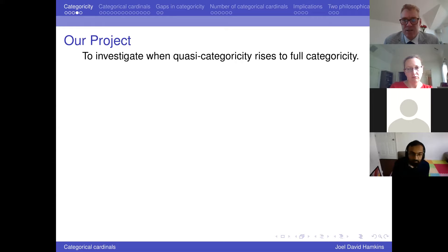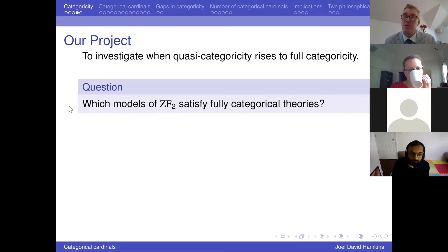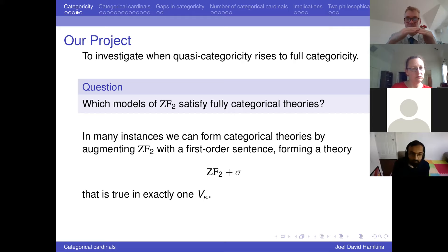The project that Robin and I set ourselves was to investigate when do we get actual categoricity — full categoricity — from this quasi-categoricity. If we strengthen the theory, in many cases we can get full categoricity. So which models of second-order ZF satisfy fully categorical theories? Many of them do. In many instances, we can add a single sentence and get a categorical theory — meaning it's true in exactly one of those V_kappas.